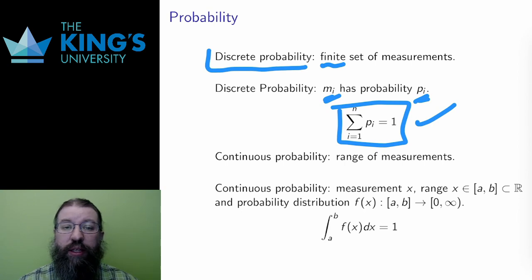Discrete probability, at least at the introductory level, doesn't really need calculus at all. Most of the main ideas can be defined just with sums and algebra. This expression, that all the probabilities add up to one, is just a finite sum. No calculus is required.